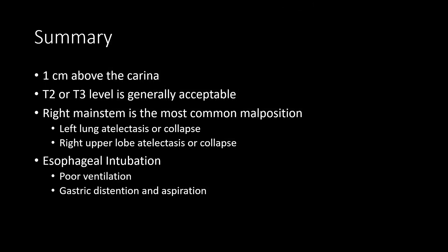In summary, you want that endotracheal tube tip one centimeter above the carina. The T2 or T3 level is generally acceptable if you can't find your other landmarks. The right main stem bronchus is the most common malposition, aside from a high position above the thoracic inlet. When you have right main stem intubation, you're at risk for left lung collapse and right upper lobe collapse. If you see the endotracheal tube pass beyond the carina at midline and it doesn't follow the course of one of the bronchi, you have to be worried about esophageal intubation — which can be an emergency due to very poor or no ventilation and the potential for gastric distension and aspiration.